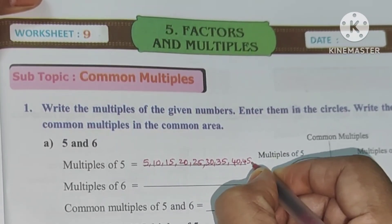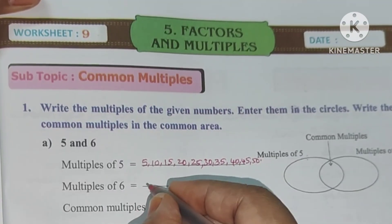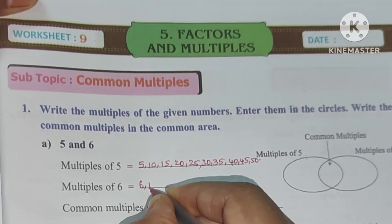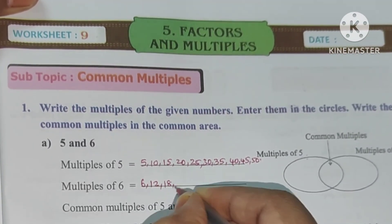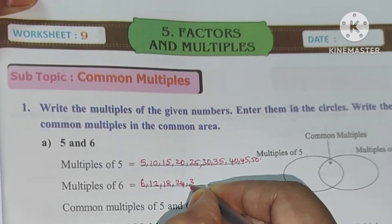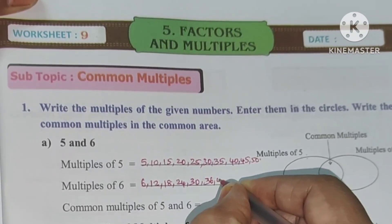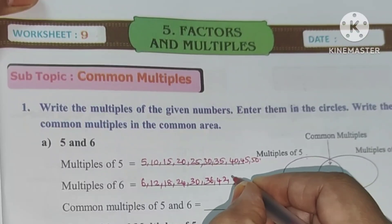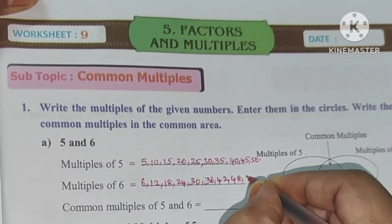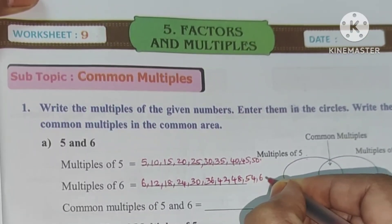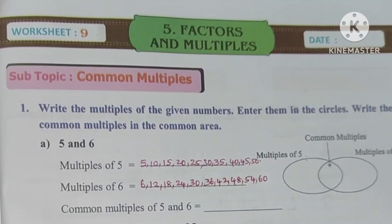6×1 is 6, 6×2 is 12, 18, 24, 30, 36, 42, 6×8 is 48, 6×9 is 54, 6×10 is 60. So now when we make the table, we have to find common multiples.